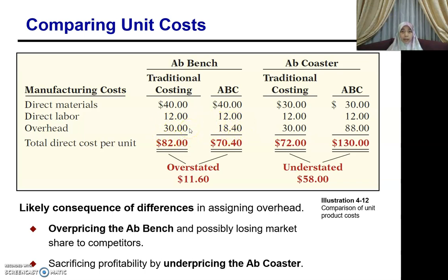Under the traditional method, the overhead is RM30 per unit. But using activity-based costing, the overhead for AppBench is RM18.40 per unit. Adding everything together gives a total cost of RM70.40 per unit under ABC, compared to RM82 per unit under the traditional costing method.